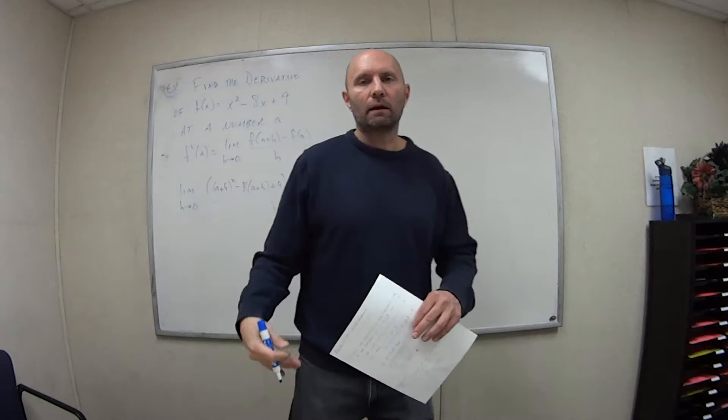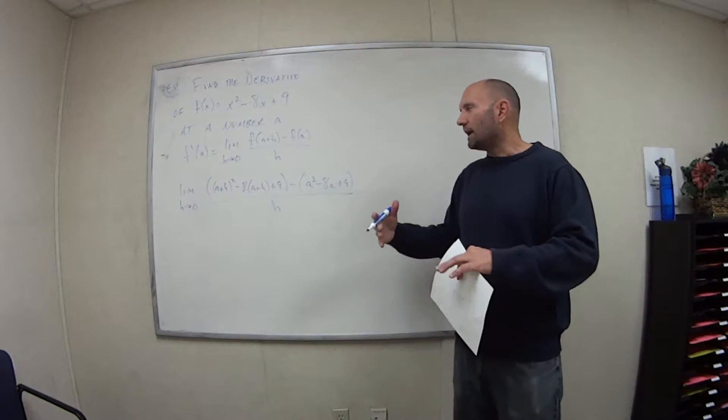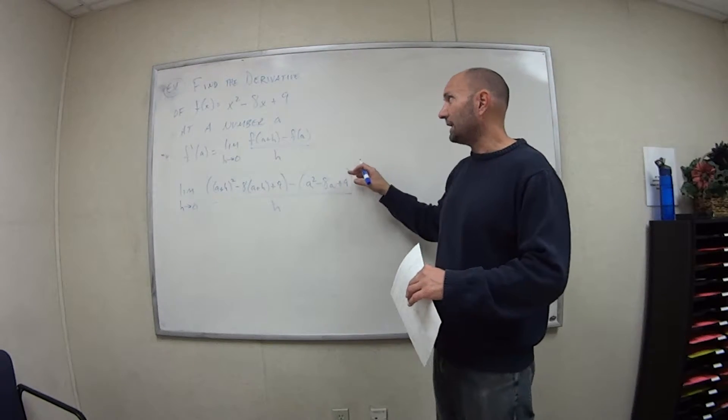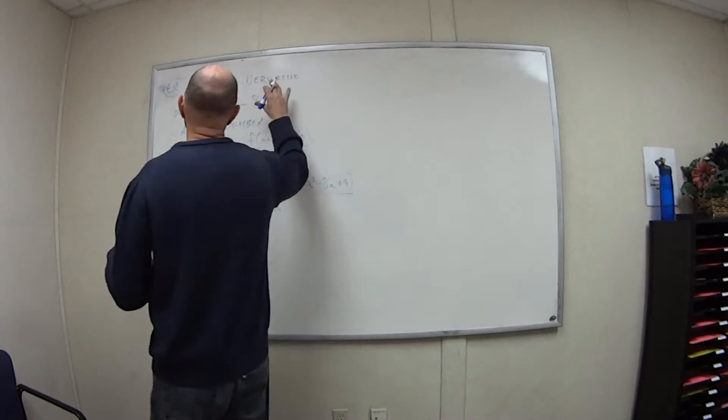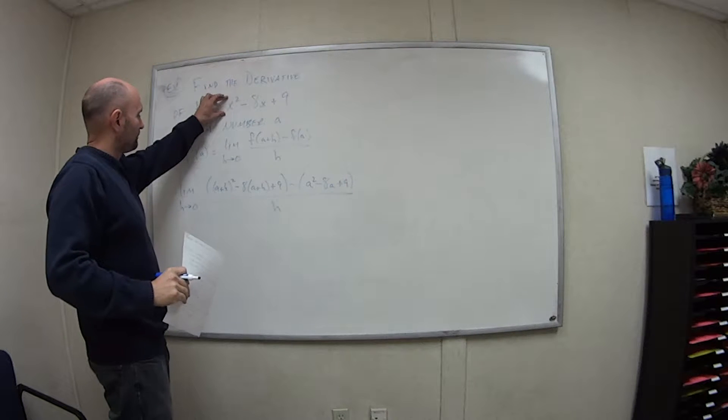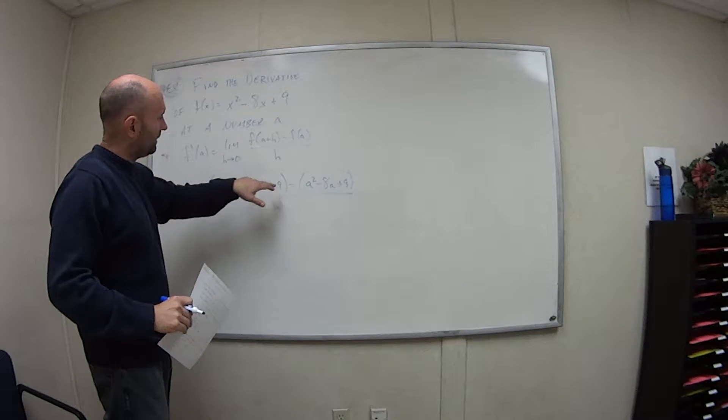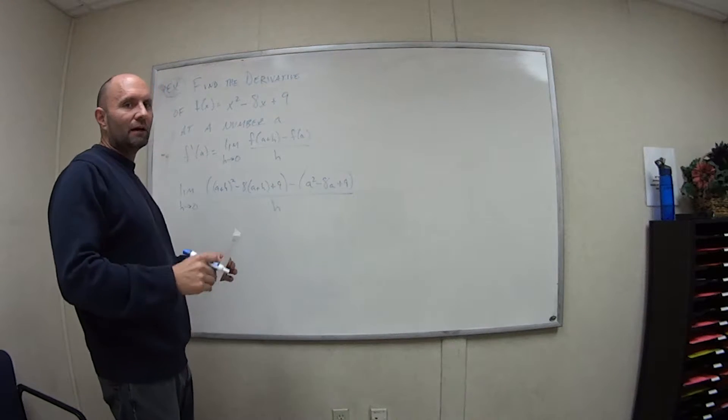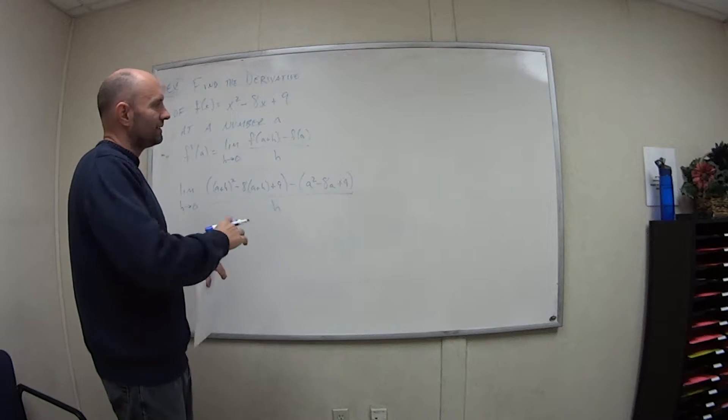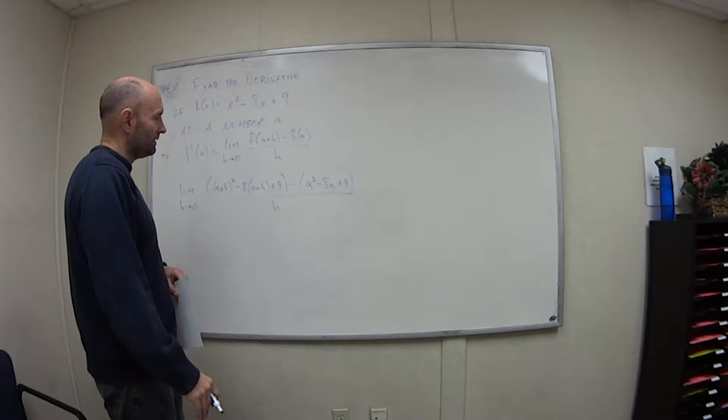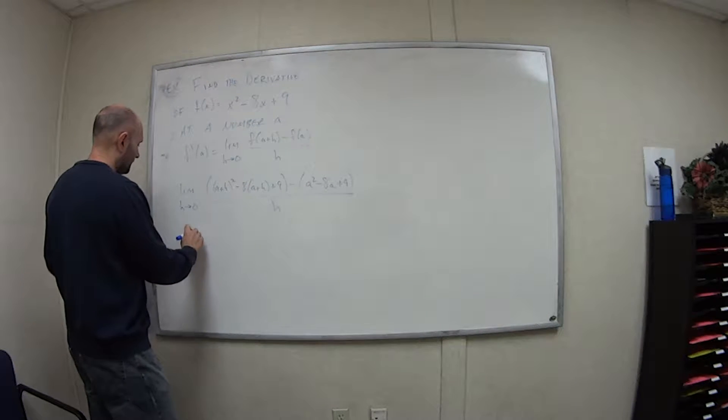And then we're subtracting f of a, so we just plug in a everywhere: a squared minus 8a plus 9, all over h. So again, I got to stress for you guys, you got to be careful with the algebra. There is so much going on just from this line here, and this isn't even that complicated of a function.